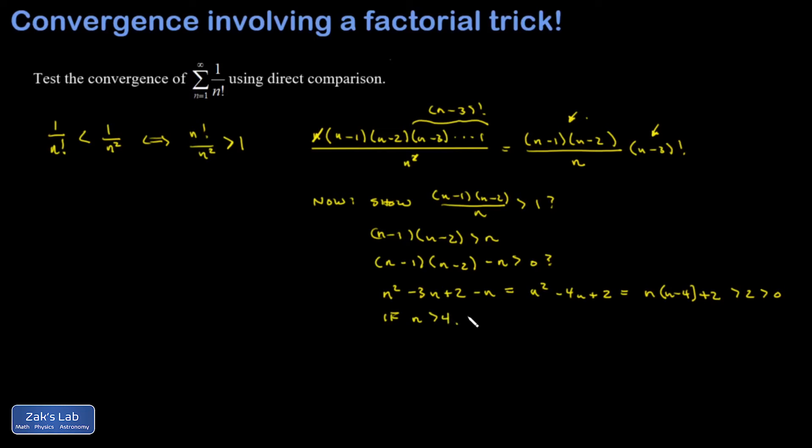If n is greater than 4, so once we cross n equals 4, we know for sure that this expression is bigger than 0, which means n minus 1 times n minus 2 must be bigger than n, which means n minus 1 times n minus 2 over n must be bigger than 1.